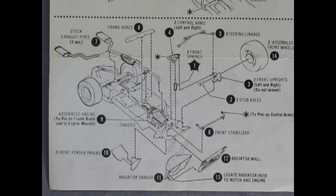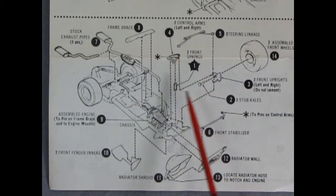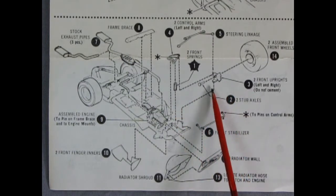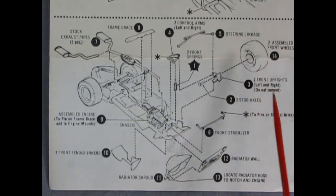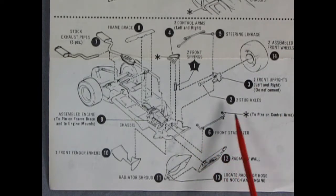And continuing with our chassis assembly. We have the stock exhaust pipes dropping in, a frame brace, our control arms, the upper A arms, the springs. We have the front uprights with a pin in it, attaching on those front wheels. And here we have a front stabilizer, radiator wall with a radiator fan shroud on here, and two front fender aprons.